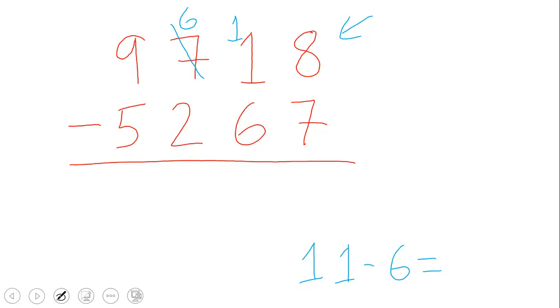11 minus six equals what? Six, seven, eight, nine, ten, eleven. That is five. So five definitely supposed to go here and eight minus seven like we saw before is one.